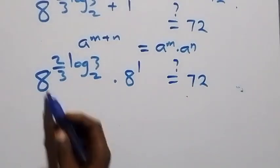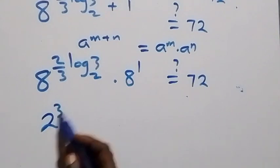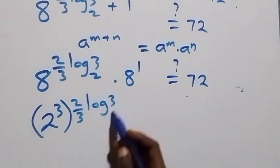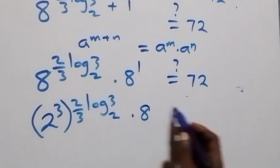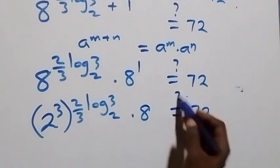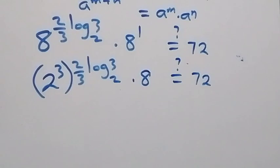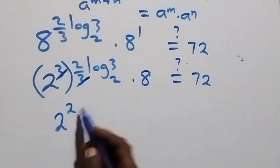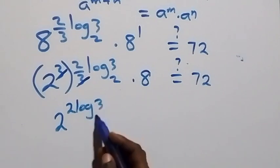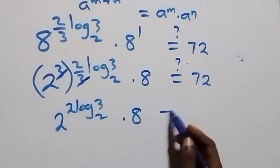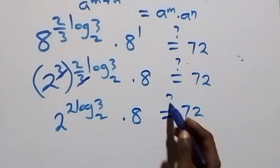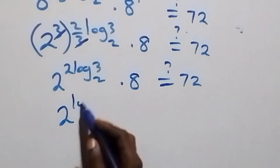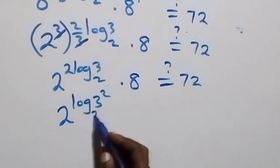We express 8 as 2 raised to power 3, so we have (2 raised to power 3) raised to power (2 over 3 log base 2 of 3), times 8. Multiplying the exponents gives 2 raised to power 2 log base 2 of 3, times 8. Using the power rule of logarithms, this becomes 2 raised to power log base 2 of 3 squared, times 8.